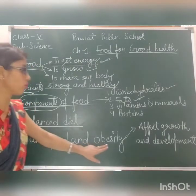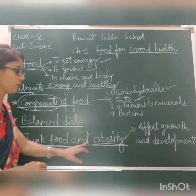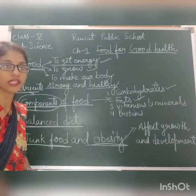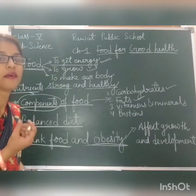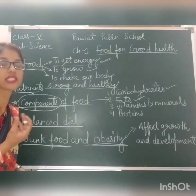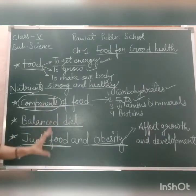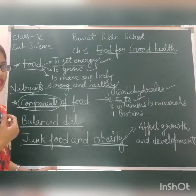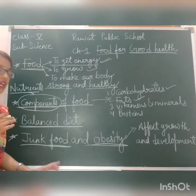After this, junk food and obesity. How is junk food related to obesity? First, what are junk foods? Examples include pizza, burger, noodles, pastries, and cold drinks — they are all junk food. They do not contain nutrients in sufficient quantity, and they contain high amounts of fat and sugar. If we consume them in large quantities, the extra fat gets deposited in our body.